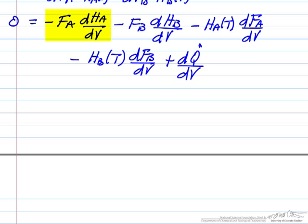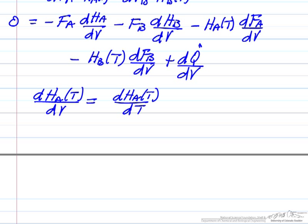So the first term, let's look at the first term, the derivative of HA with respect to V. What we're going to do is say, well that's the derivative with respect to temperature, multiply by the derivative of temperature with respect to V. And we've seen before that the reason enthalpy changes with temperature when there's no phase change for a single component is heat capacity of A. That's our definition of heat capacity, the derivative of H with respect to T. So we'll have terms like that for A and B that we can substitute back into the equation.